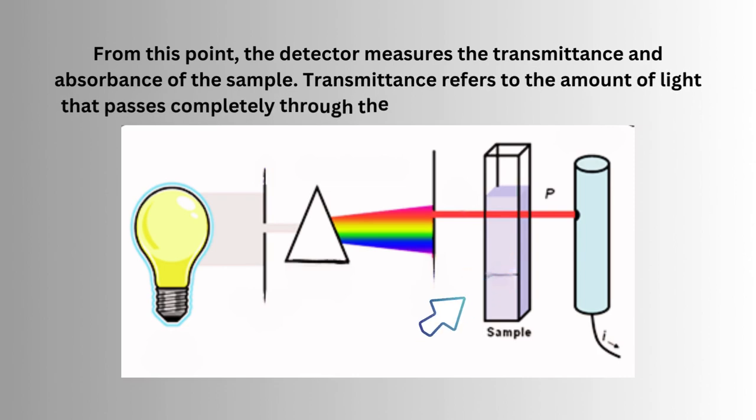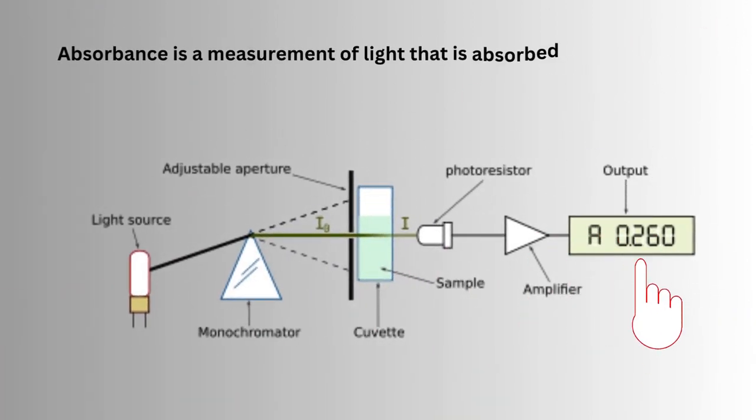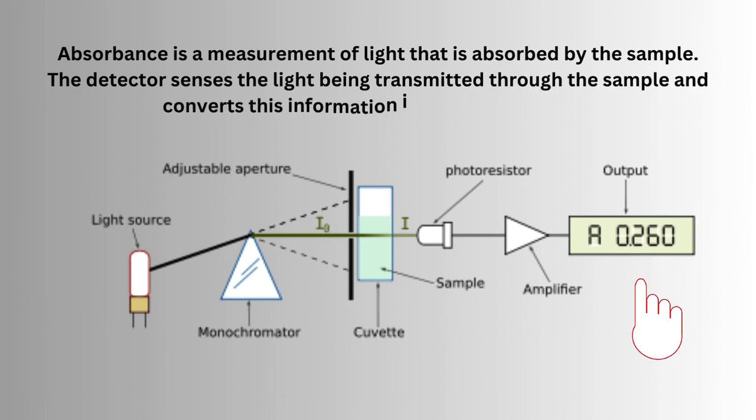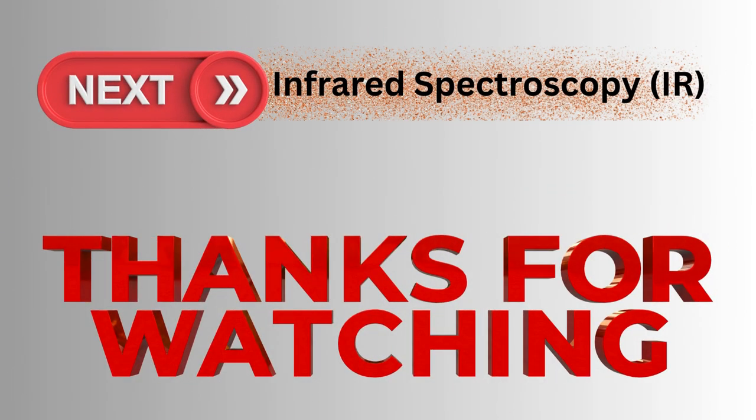Transmittance refers to the amount of light that passes completely through the sample and strikes the detector. Absorbance is a measurement of light that is absorbed by the sample. The detector senses the light being transmitted through the sample and converts this information into a digital display. Next topic: Infrared Spectroscopy (IR).